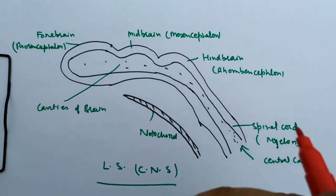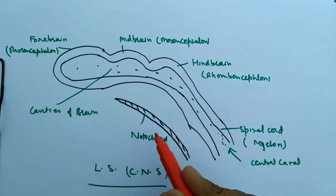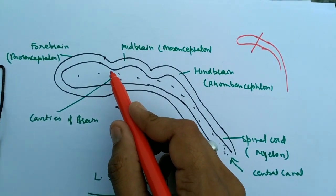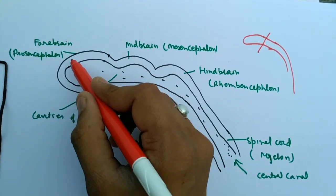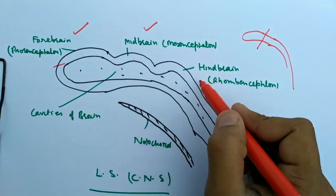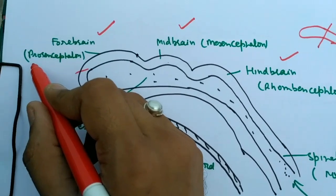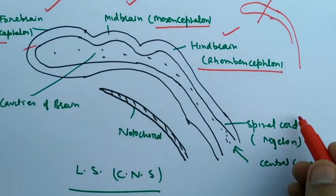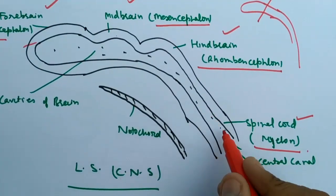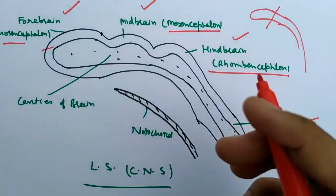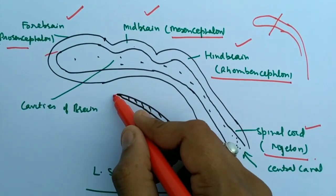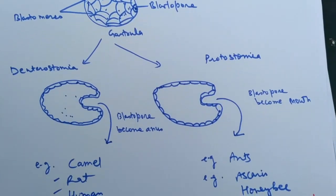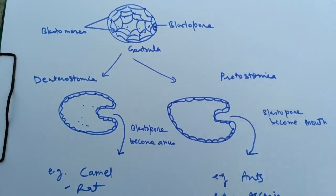The nerve cord differentiates into various parts of the nervous system. The anterior part of the nerve cord forms the brain, and the posterior part forms the spinal cord. The anterior brain differentiates into three lobes: the forebrain (prosencephalon), the midbrain (mesencephalon), and the hindbrain (rhombencephalon). The posterior part of the nerve cord forms the spinal cord, called the myelon, which has a central canal filled with cerebrospinal fluid, and below it lies the holodorsal notochord.